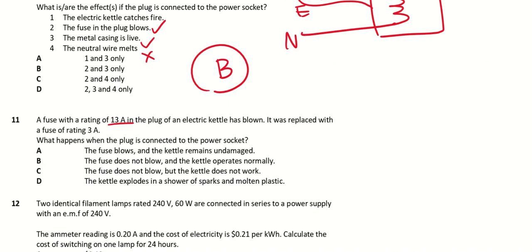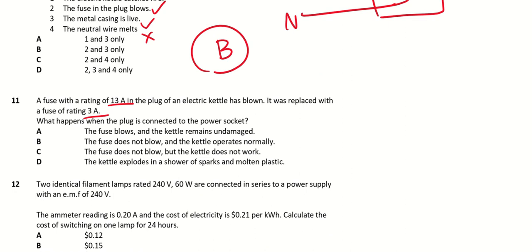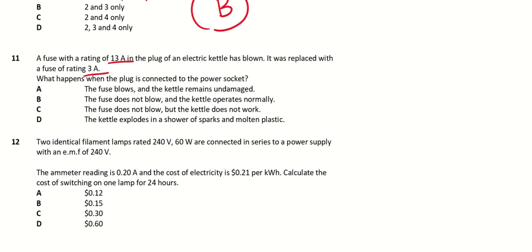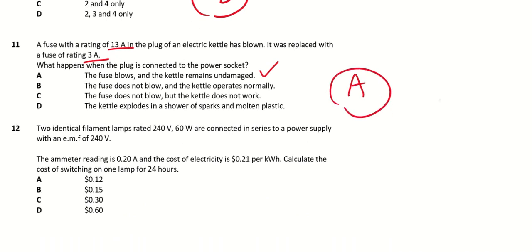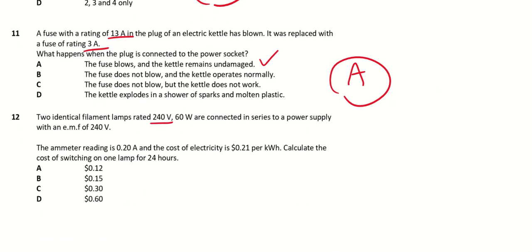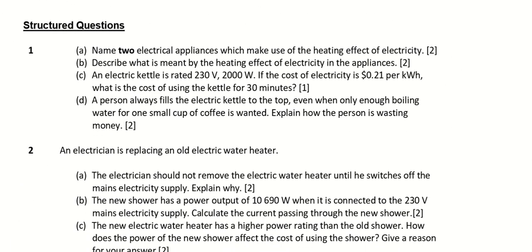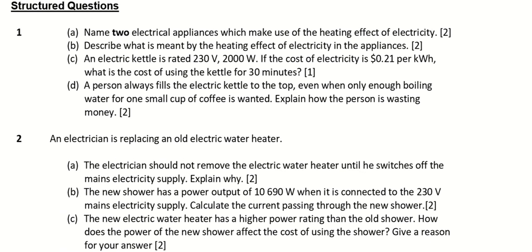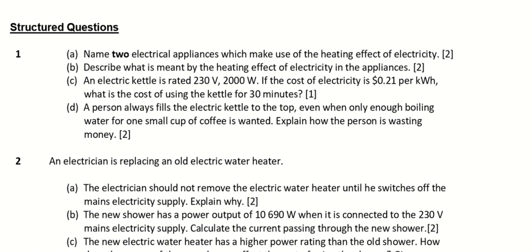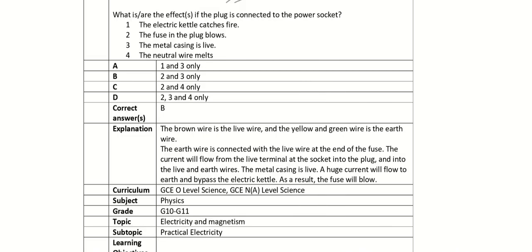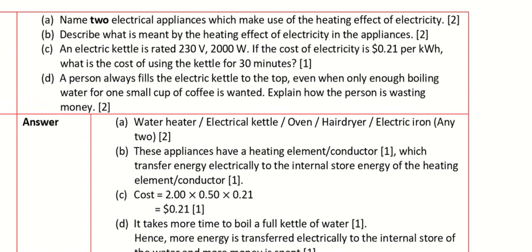A fuse with a rating of 13 amperes has blown and was replaced with a fuse of 3A — that's even worse. The fuse blows and the kettle remains undamaged. Now, name two electrical appliances which make use of the heating effect. You can find these yourself: water heater, electric kettle, oven, hair dryer, or electric iron.